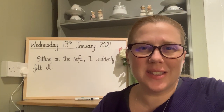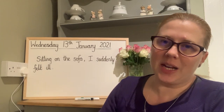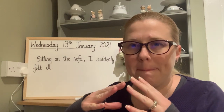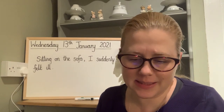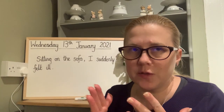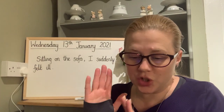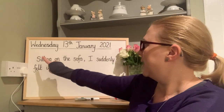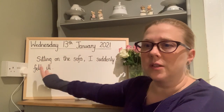It's time for our build a sentence activity. I'm going to show you how to build up this very simple sentence to make it more interesting and with some more ambitious vocabulary in it. So first of all, imagine that you're not feeling well, just like Cosmic Clive in our story. Here's our simple sentence: sitting on the sofa, I suddenly felt ill.